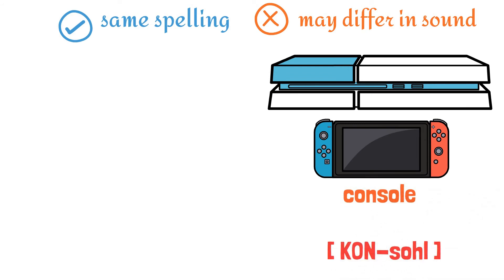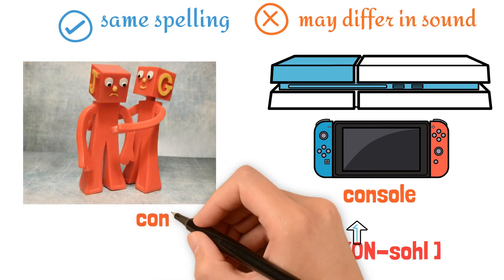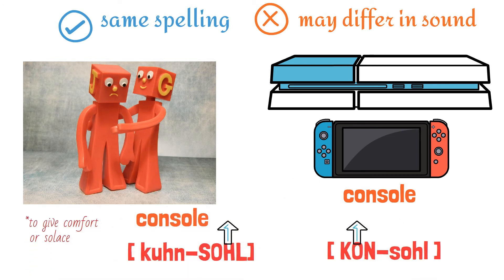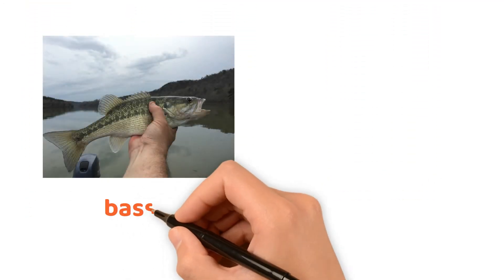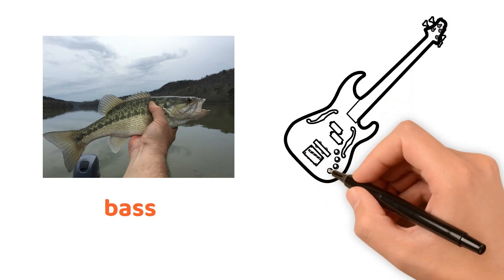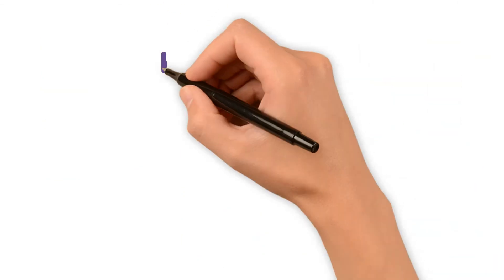Examples. Console — like gaming consoles. And console — which means to give comfort. Another example: bass — which is a type of fish, and bass — like bass guitar. Same spelling, different sounds and meanings.